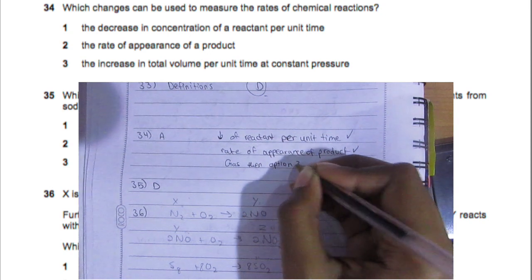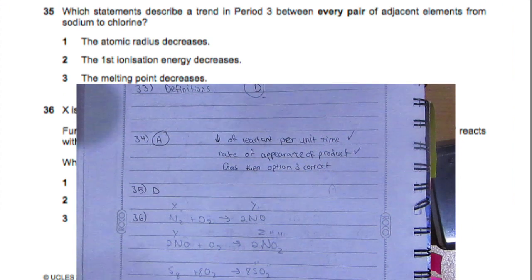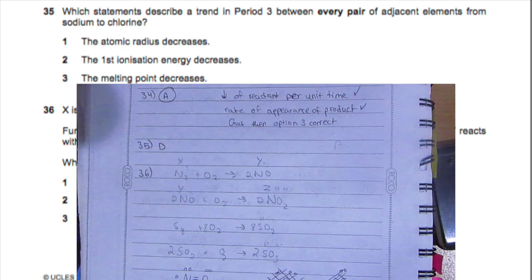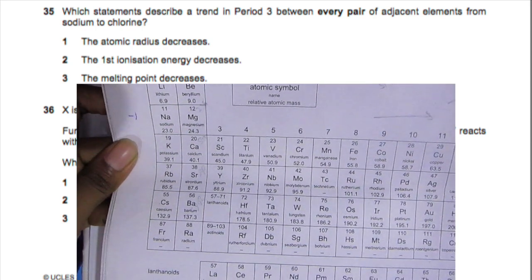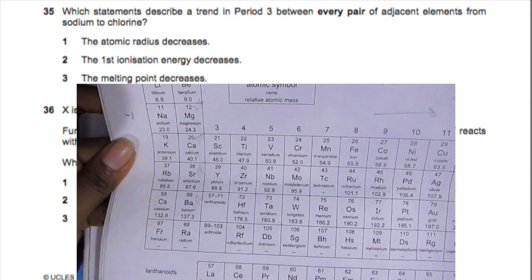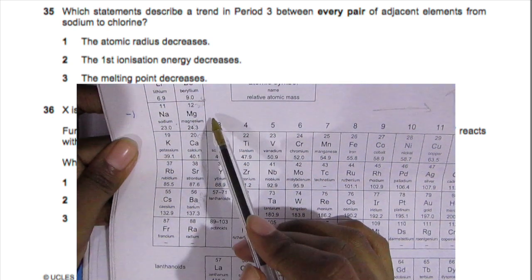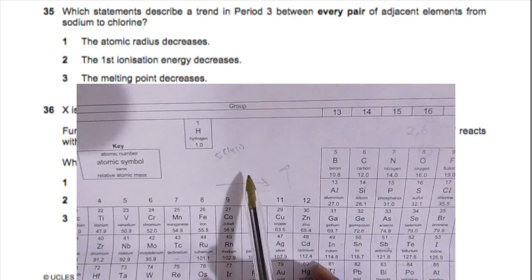Question 35: Which statements describe a trend in period three between every pair of adjacent elements from sodium to chlorine? Atomic radius decreases—that is true because when it's in the same period, the number of protons increases but the number of shells stays the same. The effect of the protons on the electrons increases, so the attraction is greater and it pulls in the electrons, bringing them closer to the nucleus.